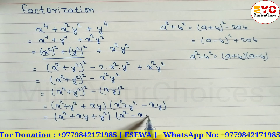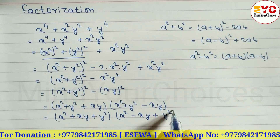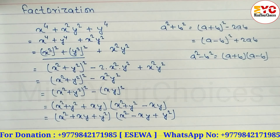So the final answer is (x² + xy + y²)(x² - xy + y²). Hope you understand how to factorize this expression from class 9. Thanks for watching till the end — keep supporting and keep sharing.